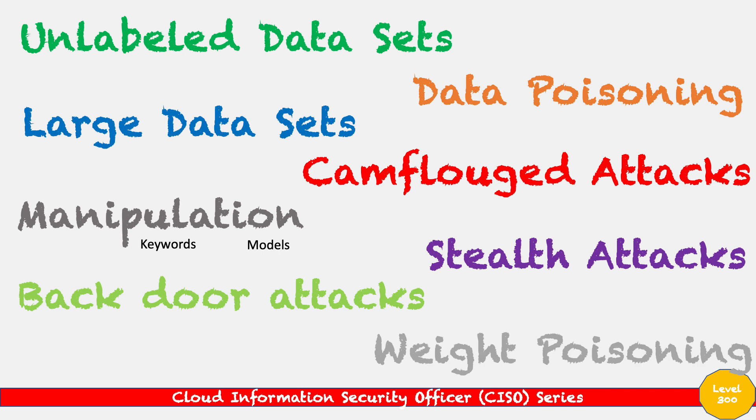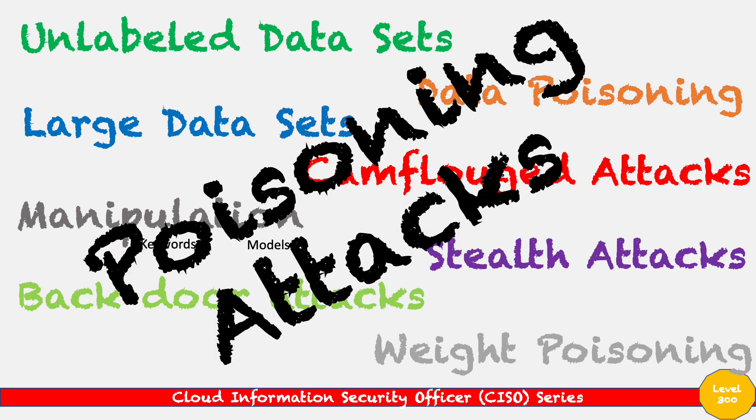There is also weight poisoning — a technique where you set certain weights that determine the outcome from the large language models. We can poison these weights so they favor some kind of additional response the way we want. Looking at all of these, these are poisoning attacks in some shape or form, because the end goal is to alter the GenAI system to respond the way we want it to.